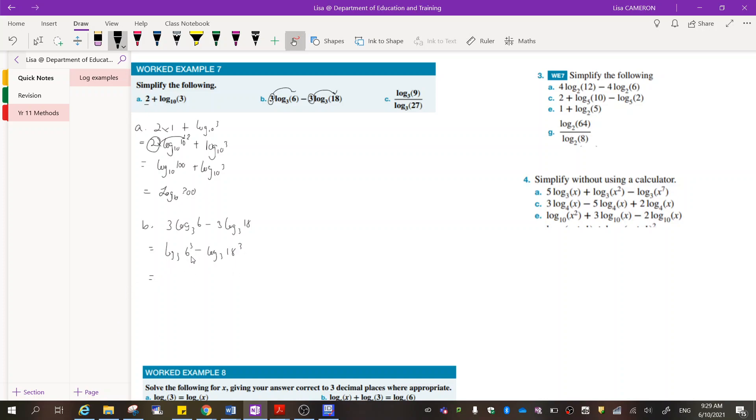Next thing I'm going to do is I am going to represent this as the division problem that it is. So log three bracket six cubed divided by eighteen cubed. And because I've got a three here and a three here, I can actually take that out of the brackets.